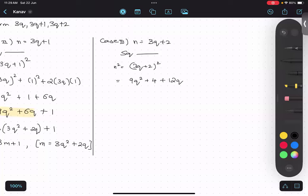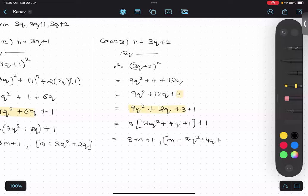So are you getting this much? Now getting stuck. Very important step. This 4 can be written as 3 plus 1. Now these 3 will have 3 common. So 3Q square plus 4Q plus 1 plus 1. Understood? So therefore 3M plus 1, where M equals to 3Q square plus 4Q plus 1. That's it.